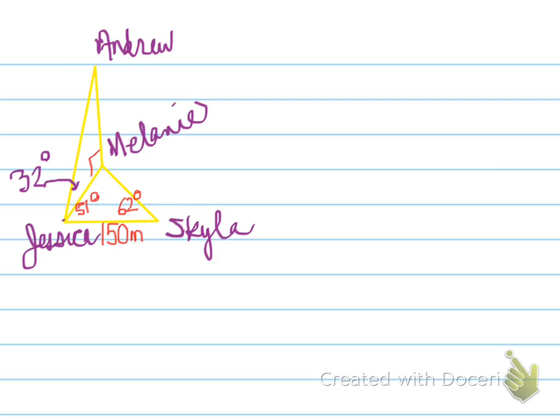Now, what we need to do is determine some information. In the triangle of Jessica, Skyla and Melanie, we know two angles and we could use the third angle to be able to solve information in the other triangle.